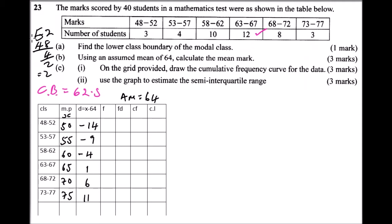Frequency, we have already been given in our table, so we just copy that. So we have 3, we have 4, we have 10, we have 12, we have 8, and we have 3. Then we multiply the frequency times the deviation, that is fd, and this you get, it is minus 42. This you get minus 36. This you get minus 40. Here you get 12. Then here you get, you multiply, you get 48. 8, then you need, you find here, it is that 3.